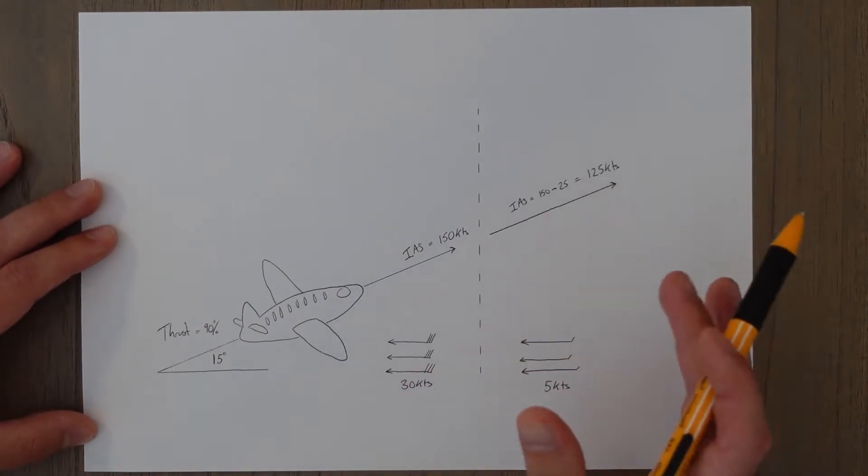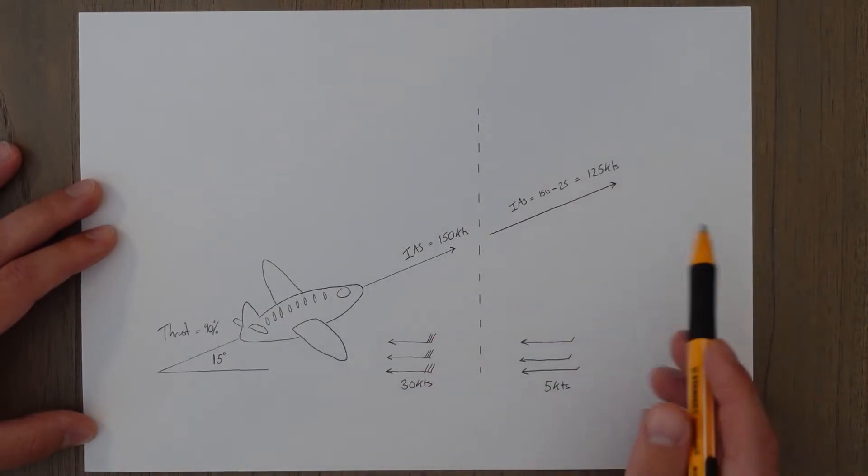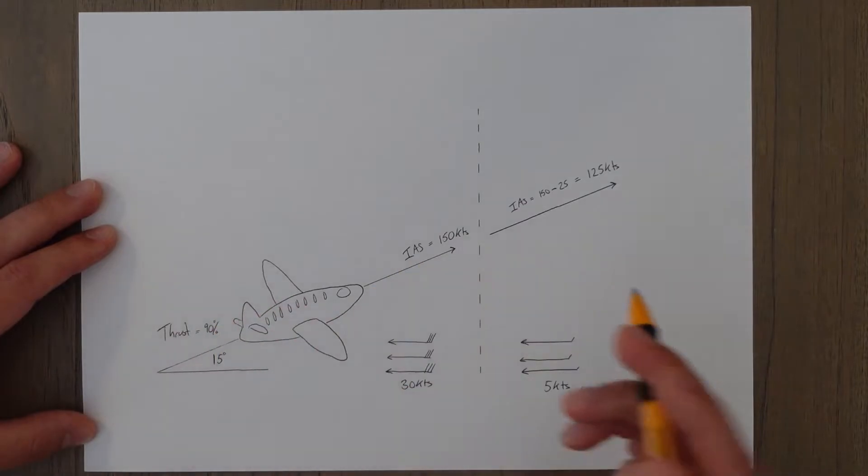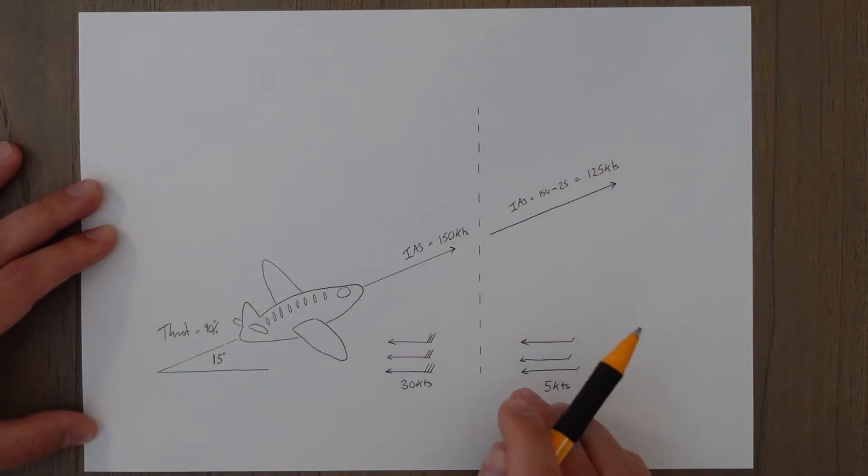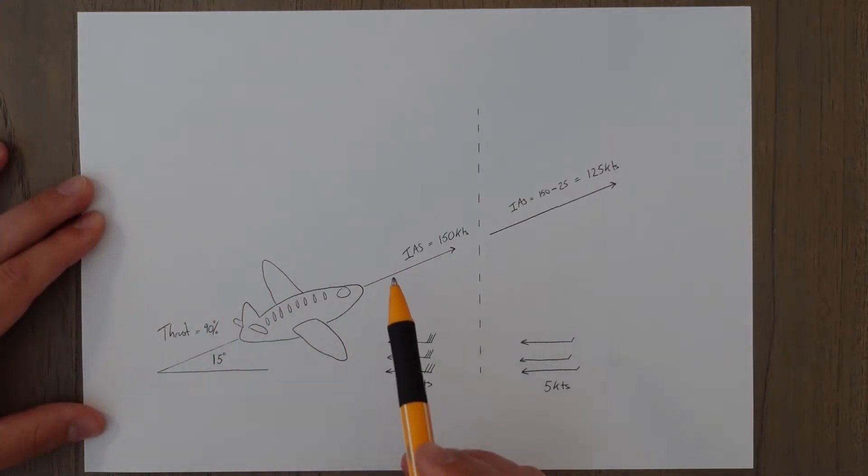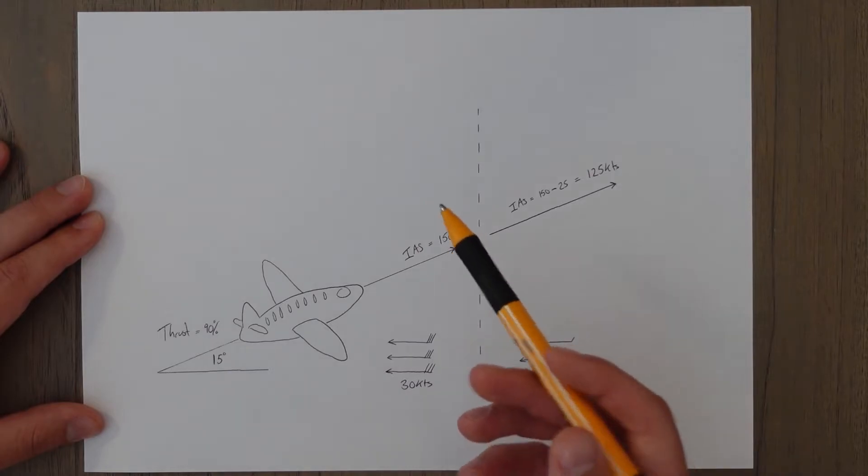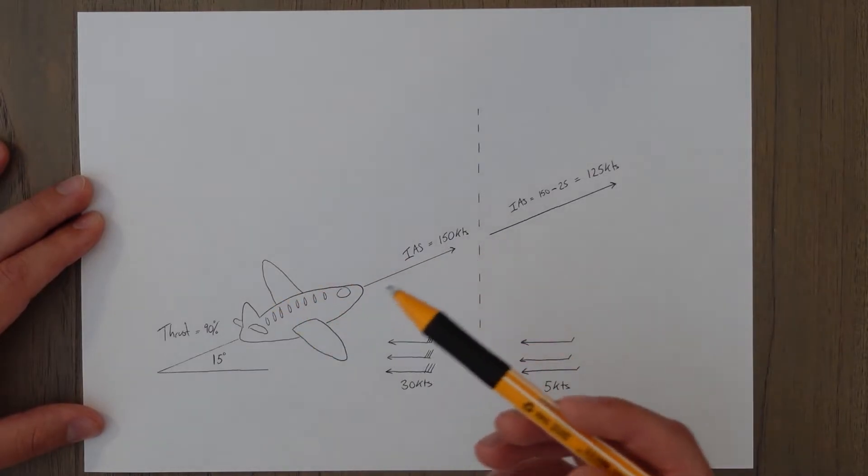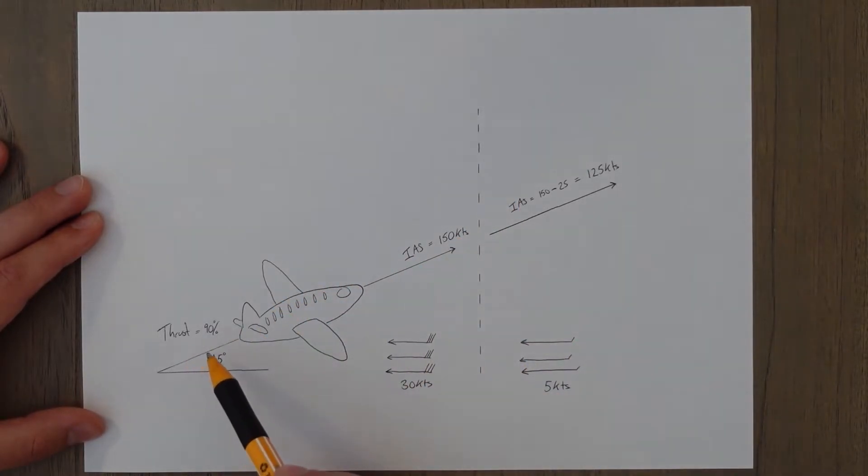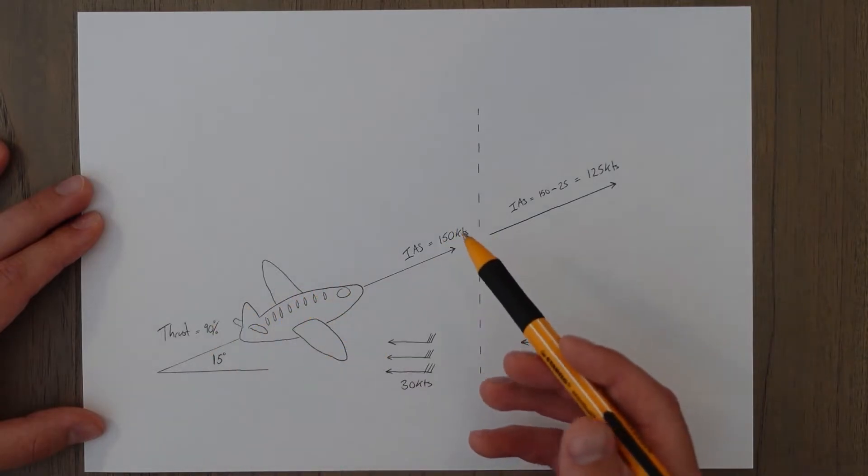Sounds a bit strange, but the airspeed is kind of measured as a combination of our forward speed plus the headwind component, which means in this example we have a forward speed of 120 knots and the headwind component of 30 knots, making our indicated airspeed of 150 knots, which helps us to create lift and fly along, and we have a thrust setting of 90 percent to achieve this indicated airspeed.